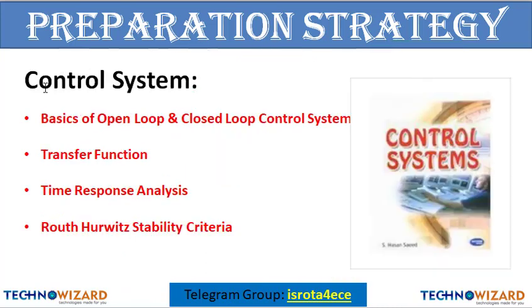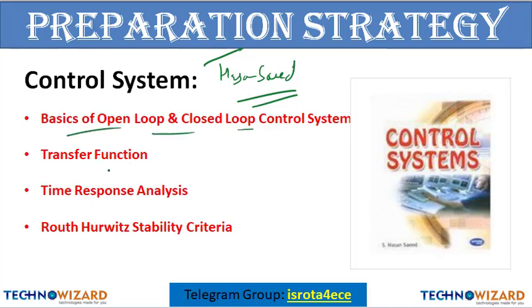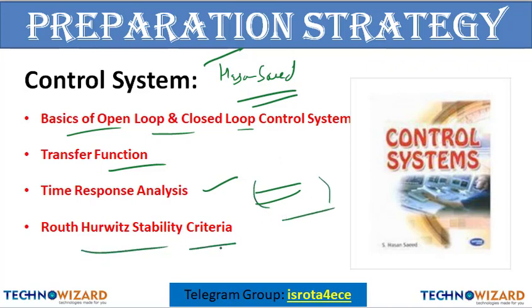Next subject is control system. Hassan Said is the best book for control system for diploma level students. Only four topics are important for ISRO: basics of open loop and closed loop systems, transfer function, time response analysis (damping ratio and settling time), and Routh stability criteria — whether the system is marginally stable, absolutely stable, or unstable.